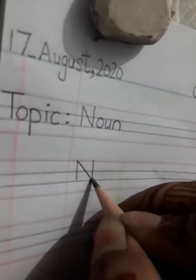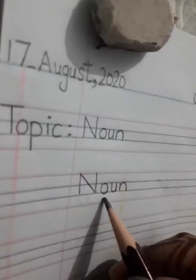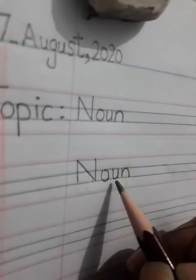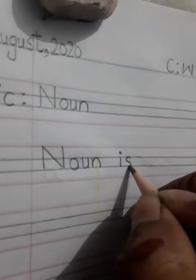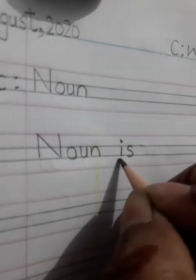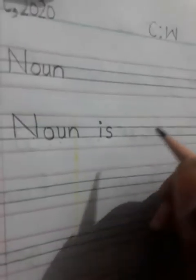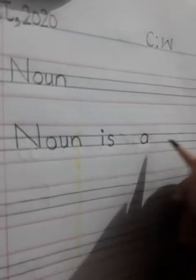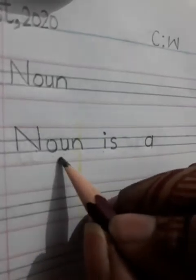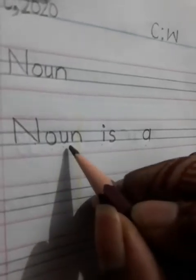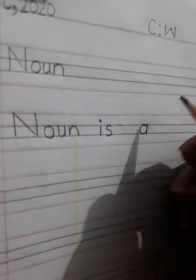Just look at what I am writing and repeat. Noun — N-O-U-N. Is — I-S. A — A-N. So we have: Noun Is A N...